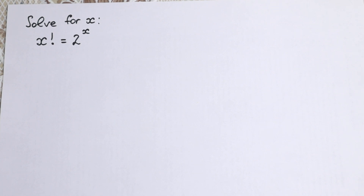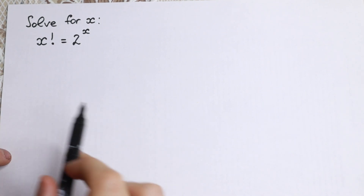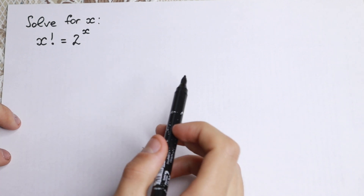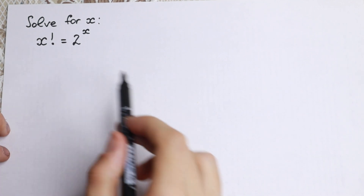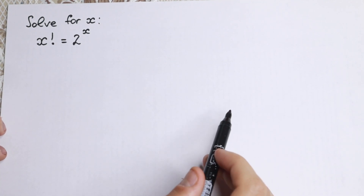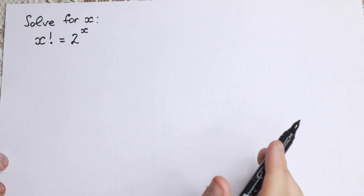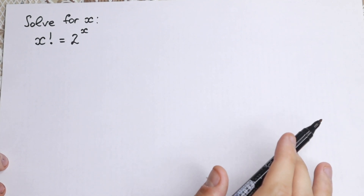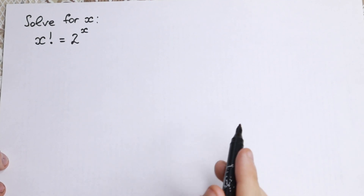Hello everyone! Welcome back to Higher Mathematics. Really interesting problem today. We have x factorial equal to 2 to the x, and we need to find x in this interesting equation. How can we find it? I want to show you my thought about this interesting problem.